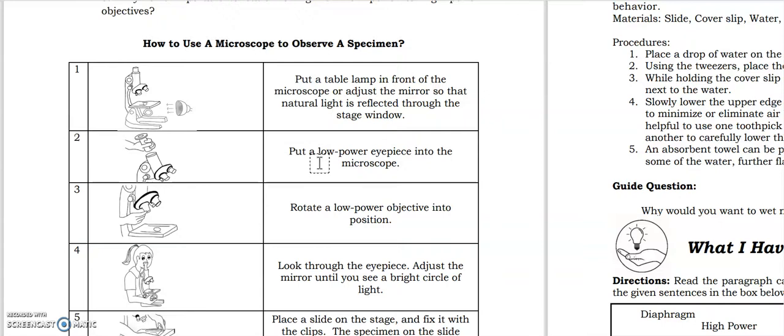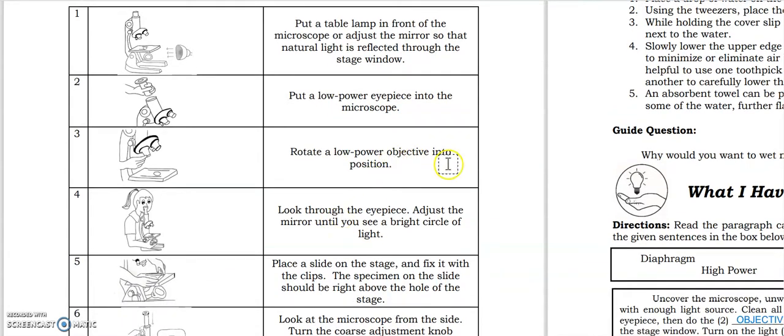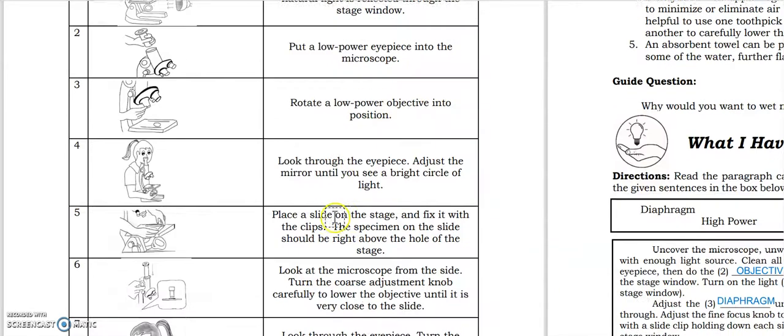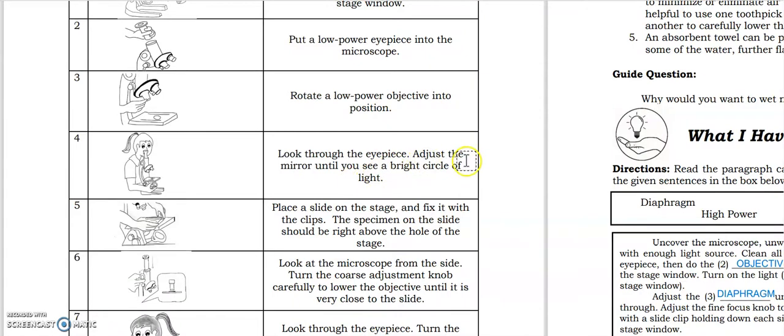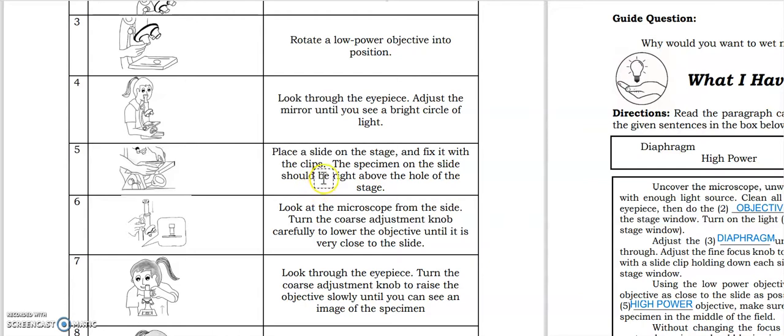So first, put the table lamp in front of the microscope or adjust the mirror so that the natural light is reflected through the stage window. Then second is to put a low power eyepiece into the microscope. Third is to rotate a low power objective into the position. Fourth is to look through the eyepiece, adjust the mirror until you see a bright circle of light. Fifth is to place a slide on the stage and fix it with the clips. The specimen on the slide should be right above the hole of the stage.